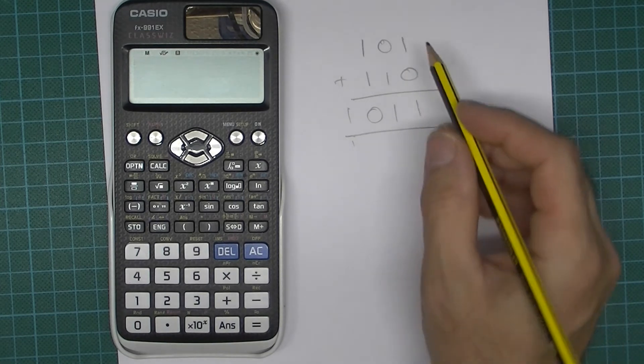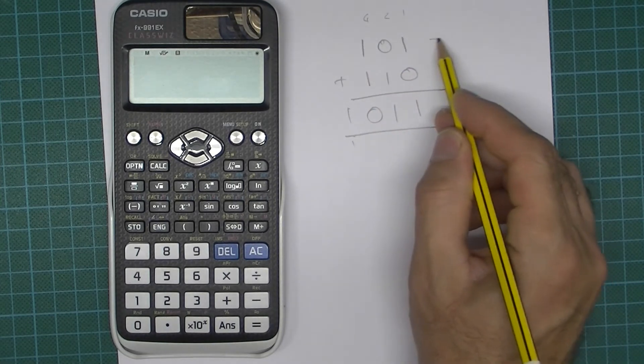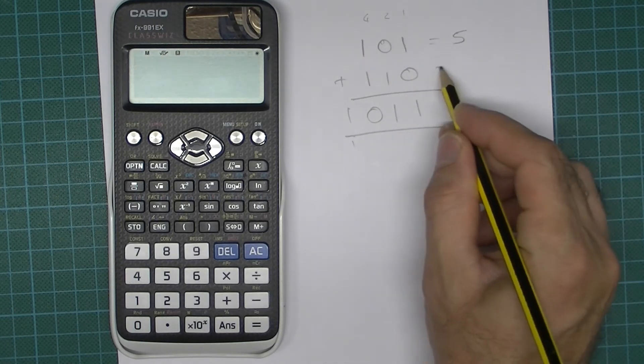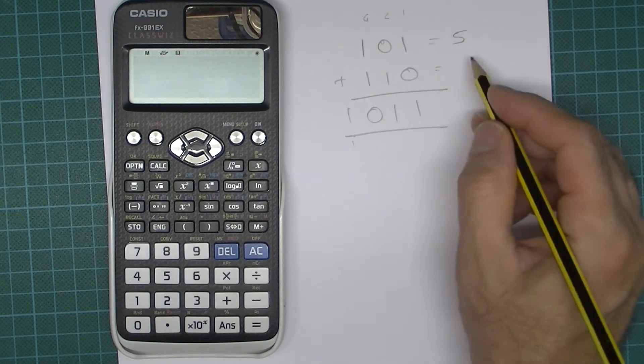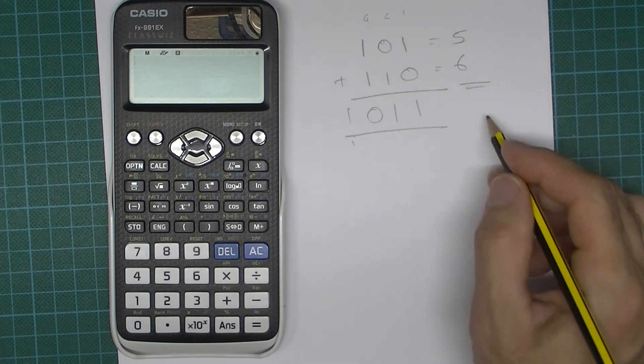And of course if you want to just check that, remember this is 1s, 2s and 4s, so this will be equivalent to decimal 5, and this will be equivalent to decimal 6 because we've got 1 lot of 4, 1 lot of 2.